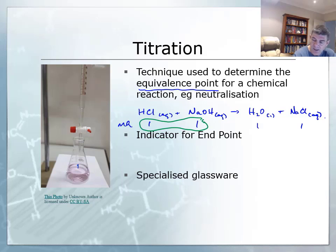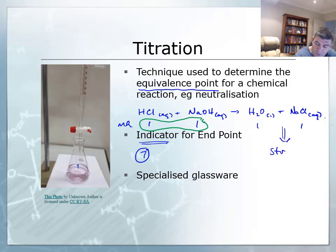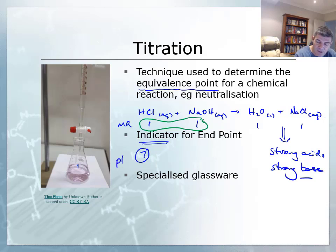In order to determine exactly where that equivalence point is, we need to select a correct indicator. Some of these will have their equivalence point at a pH around 7. This one will, because it's an example of what we call a strong acid plus a strong base, and so it's going to have a pH of 7.